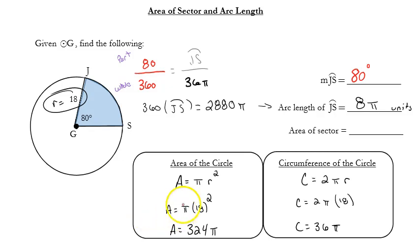Now, area, I'm going to wind up doing the same thing. I still have the part over the whole, and I now know that the whole circle is 324π units squared. That will go in my denominator. I don't know the area of the sector, so I'll just call it area of the sector. So I can cross multiply. 360 times the area of that sector is going to be equal to 80 times 324, or 25,920π units.